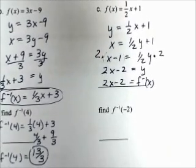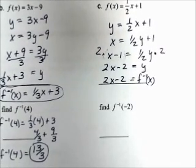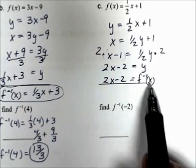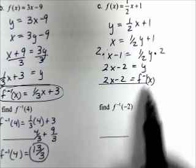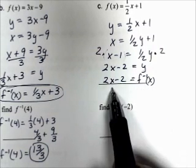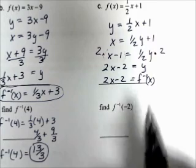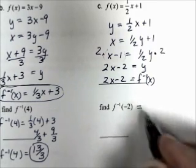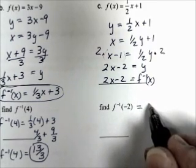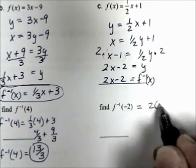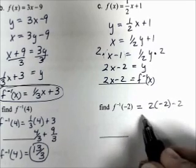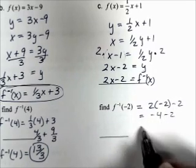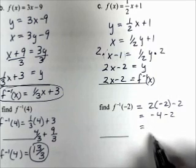Now evaluate f inverse of −2. Take f inverse of x and replace x with −2: 2(−2) − 2 = −4 − 2 = −6. So f inverse of −2 = −6.